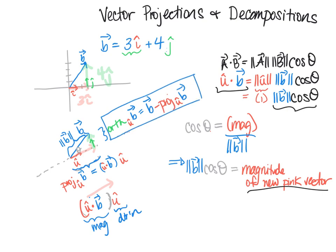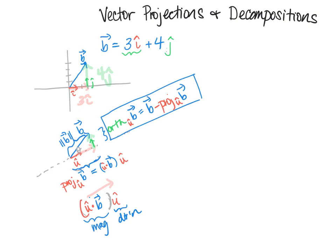So why do we care? There are lots of applications. Sometimes we're interested in decomposing a force into components in a certain direction and orthogonal to it. For example, if we think of this b vector as the velocity vector of wind and an airplane flying along this dotted gray line, then the projection vector — the light pink — is the tailwind, and the orthogonal vector — the light green — is the crosswind.